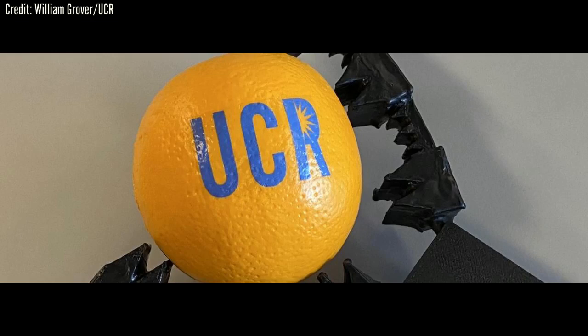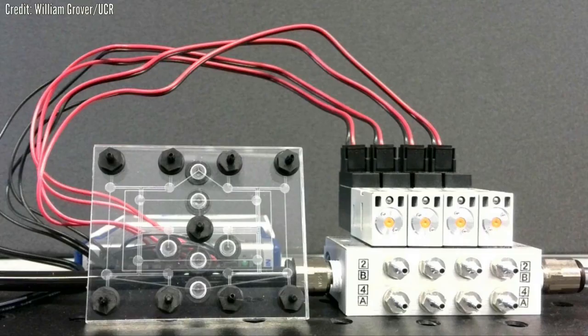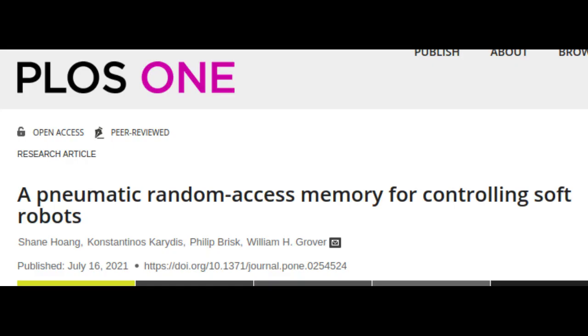Engineers at UC Riverside have unveiled an air-powered computer memory that can be used to control soft robots. The innovation overcomes one of the biggest obstacles to advancing soft robotics, the fundamental mismatch between pneumatics and electronics. The work is published in the open-access journal PLOS One.